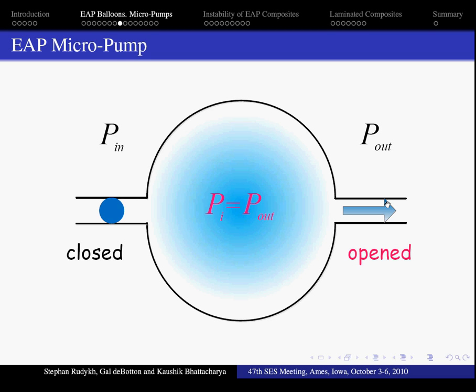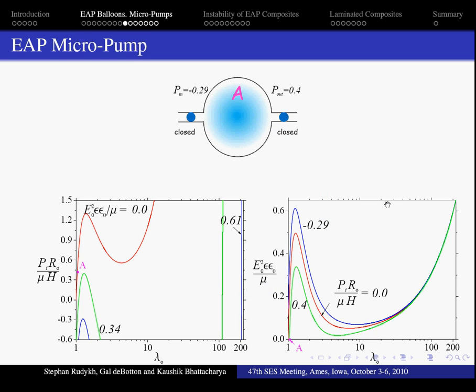In this example the normalized pressure P_in is minus 0.29 and P_out is 0.4.